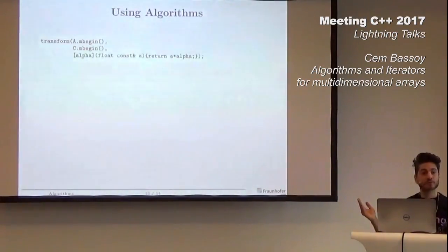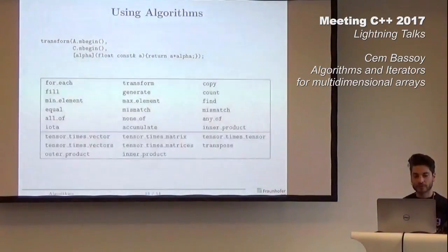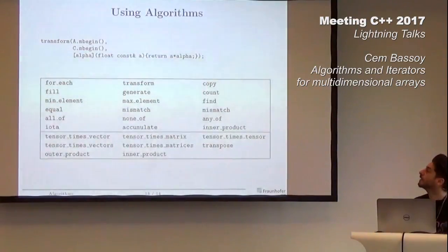How do we use it? It's so simple. We only need to instantiate the multidimensional iterator for A and C and we use a lambda function, whatever you like, and then that's it.